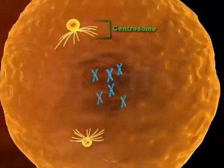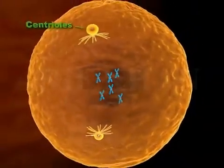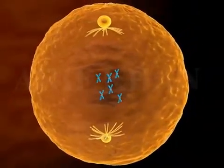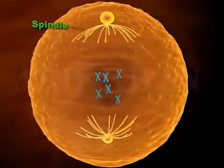The centrosomes, each with a pair of centrioles, move apart to the opposite poles, forming a spindle between them.